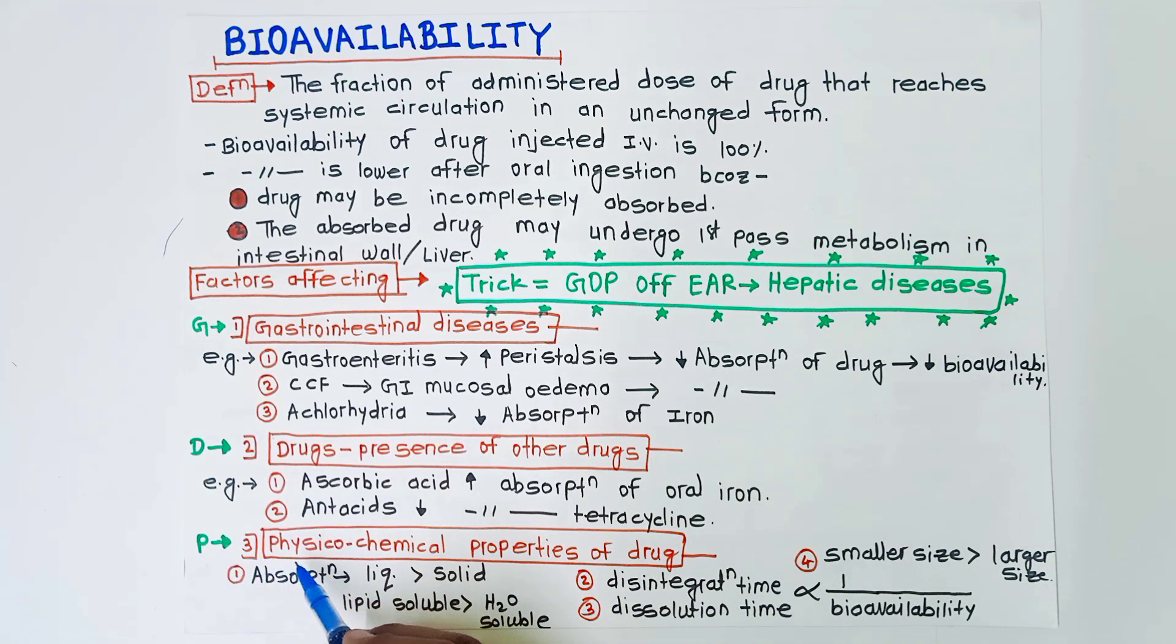Then P for physical chemical properties of drug. In this there are four physical chemical properties: absorption, disintegration time, dissolution time, and smaller size, it means size of drug. In absorption, the liquid drugs - absorption of liquid drug is more than the solid, lipid soluble is more than the water-soluble drugs. Disintegration time and dissolution time are inversely proportional to the bioavailability. It means if disintegration time and dissolution time is more, then the bioavailability must be less. The absorption of smaller size drug is greater than the larger size drugs.